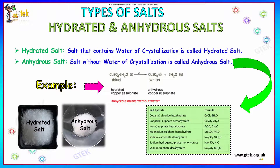Moving towards the types of salts, we have anhydrous salts and hydrated salts. Hydrated indicates the salt with water — the salt that contains water of crystallization is called hydrated. Whereas salt without water is called anhydrous salt. Anhydrous means without water.